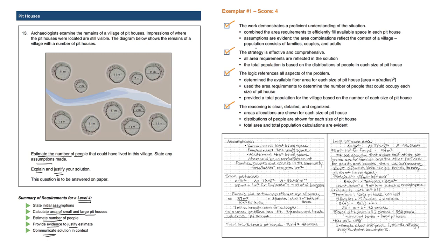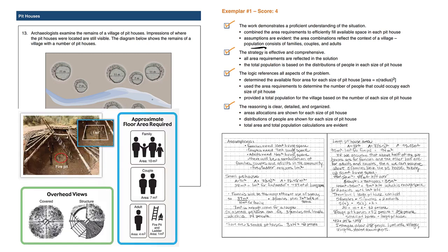We need to be mindful of the population. Referring back to the diagram, we recognize that families, couples, and adults all require different spaces. We need to make sure that our population is based on the distributions of people in each size of pithouse. We need to show that we're using math and calculating the size of each pithouse using the circle formula, area equals pi r squared.